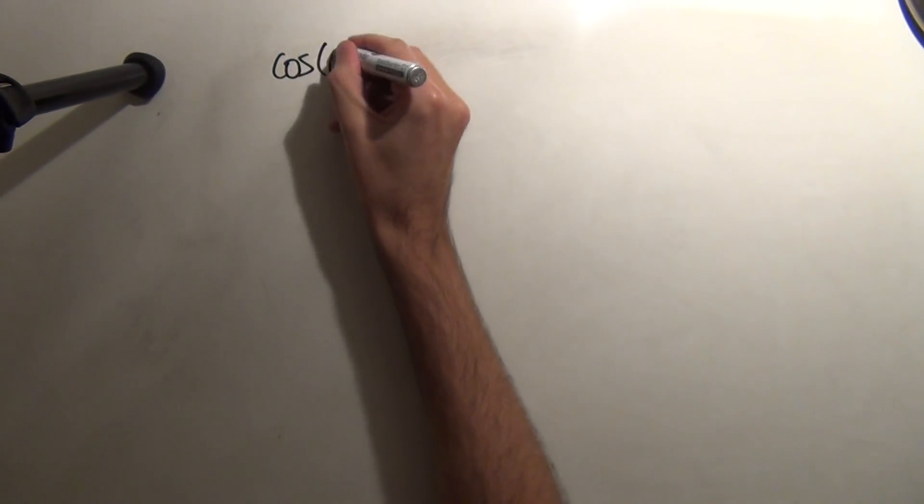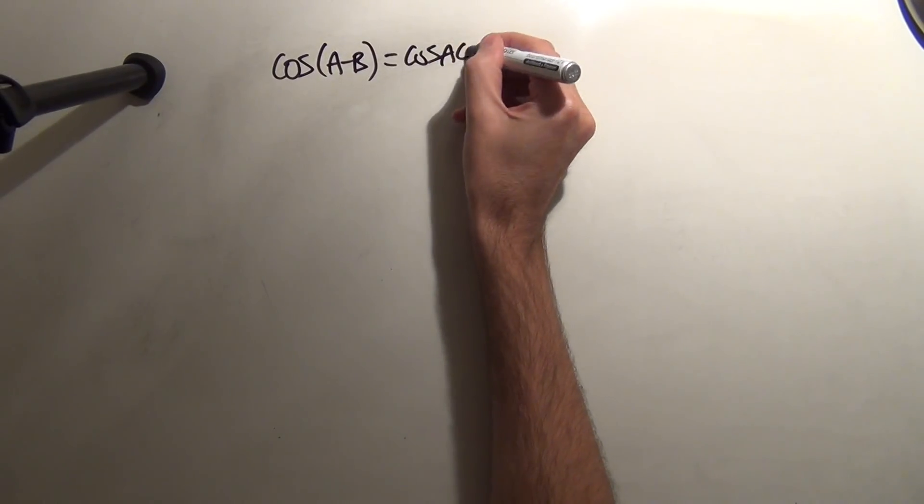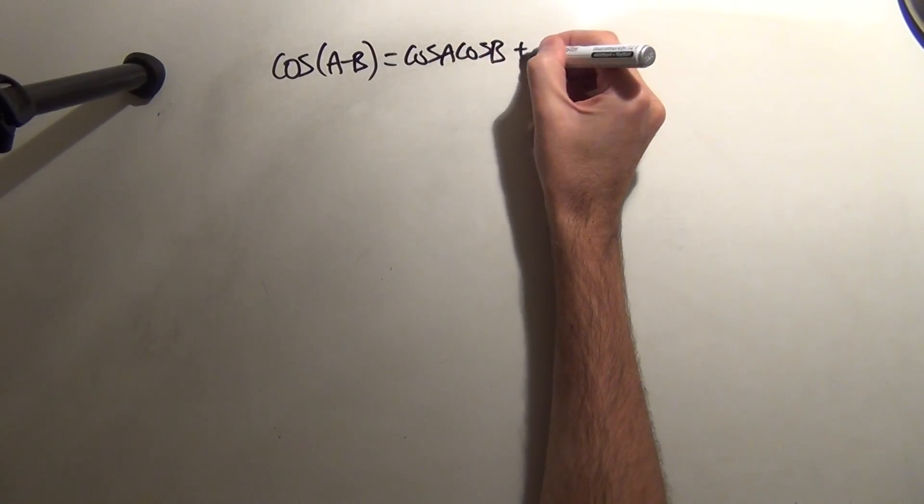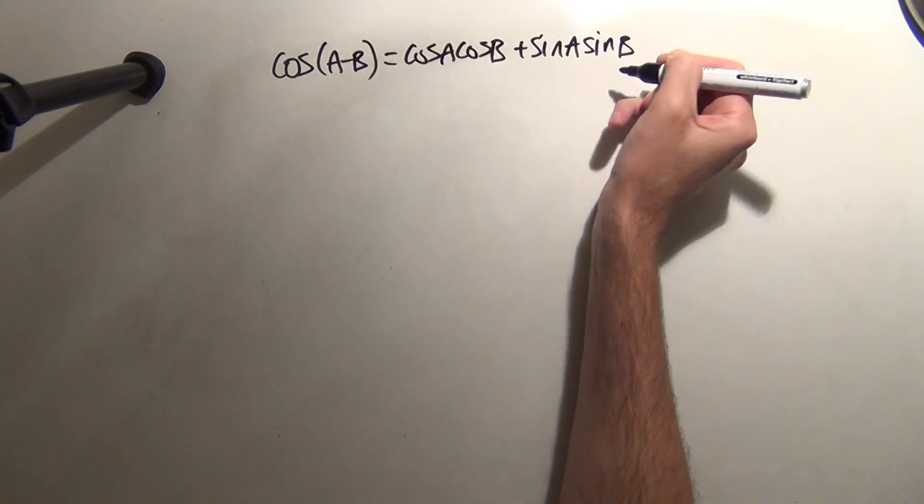I'm going to try and prove that cos(A-B) = cos(A)cos(B) + sin(A)sin(B).